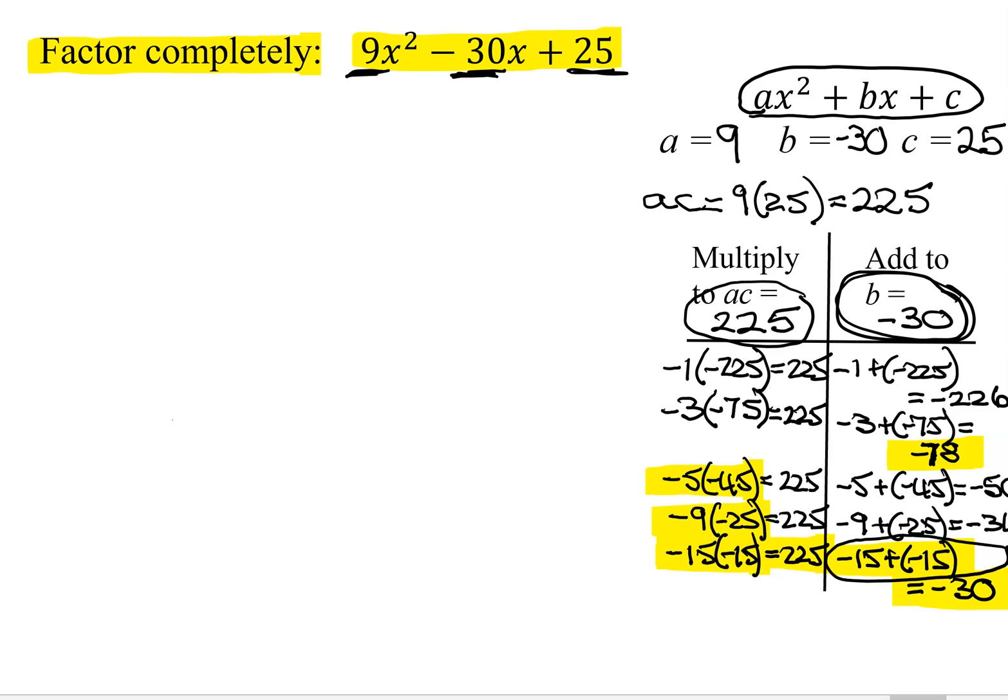Those are not my factors. That's what I'm going to break my middle term down into. So I'm going to rewrite my expression as 9x squared minus 15x minus 15x plus 25. All I've done is broken that middle term of negative 30x into two terms. So now how many terms do I have in my expression? I have four terms. How do you factor four terms? By grouping.